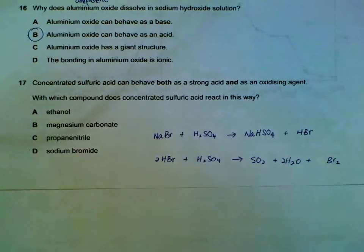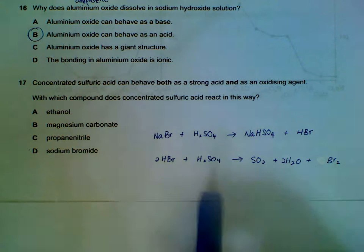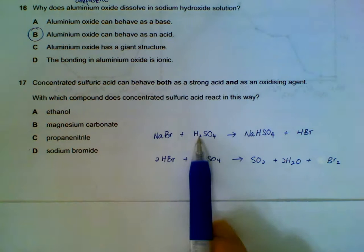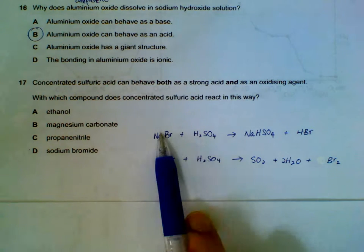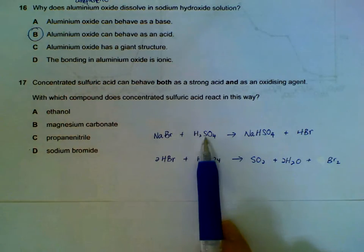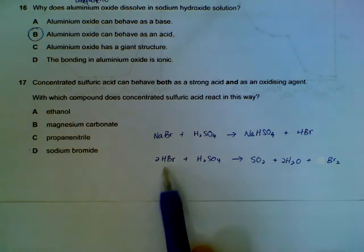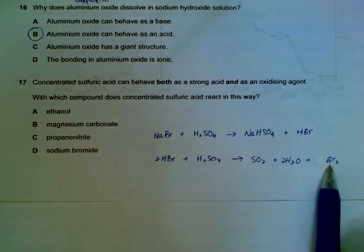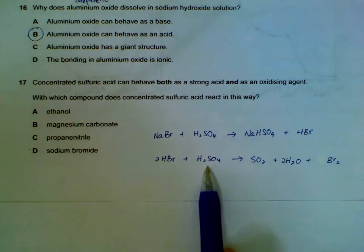Number 17, concentrated sulfuric acid. It will react with your sodium bromide. In the first reaction, it actually donates a proton. In this case, it's acting as an acid. Okay, it loses some proton to form and thus acts as an acid. And then after that, when HBr is formed, it actually oxidizes HBr to Br2. So in the second case, it's acting as an oxidizing agent.